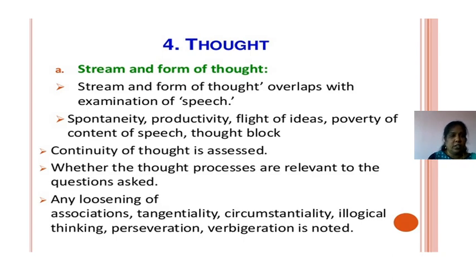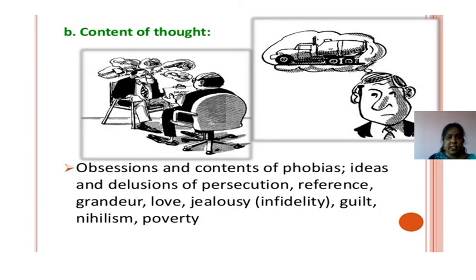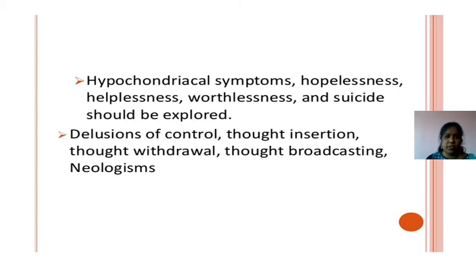Thought: stream and form of thought overlap with the examination of speech. We look at productivity: spontaneous speech, flight of ideas, poverty of content of speech, and thought block — where the patient suddenly stops. Continuity of thought is assessed, and whether the thought process is relevant. Loosening of association is also noted. Content of thought includes: obsessions, phobias, ideas, delusions of perception, reference, grandeur, love, jealousy, guilt, and poverty.